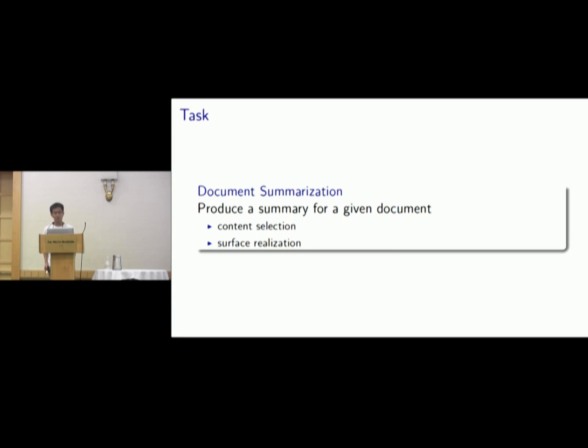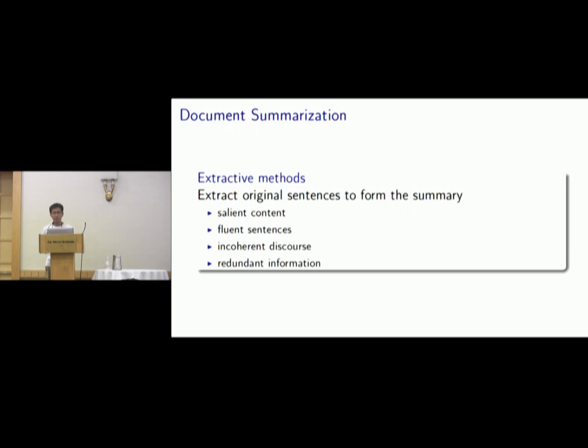The task of document summarization is to produce a summary for a given document. It usually contains the components for content selection to select the salient content and the surface realization to produce the summary. The study of document summarization used to focus more on extractive methods that extract original sentences to form the summary.